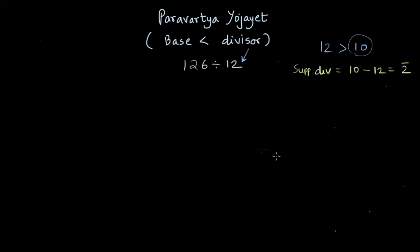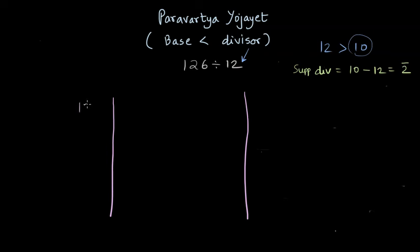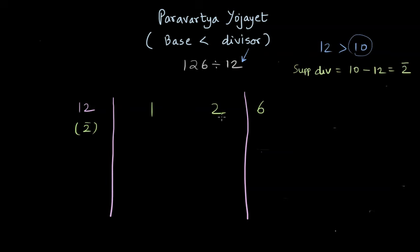Let's see how we can solve this using Paravartya Yojayet — this is just an extension of the Nikhilam method. We make three parts of the page, write the divisor 12 on the left, and below it the supplement divisor minus two. Since our base is 10 with one zero, we reserve one place for the remainder, keeping the 6 of 126 there, and writing 1 and 2 in the other sections.